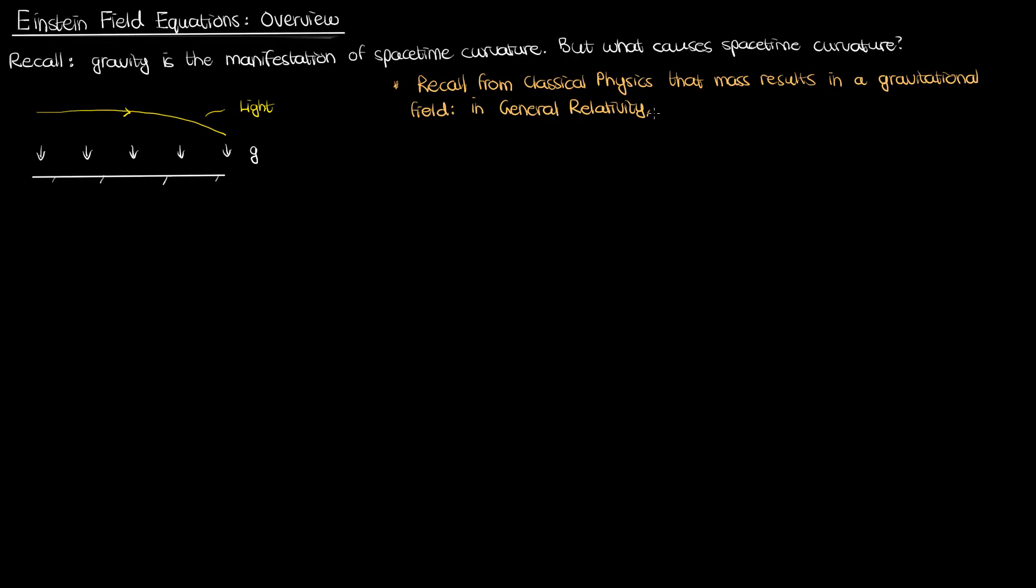From classical physics you know that mass results in a gravitational field, but in general relativity the idea of gravitational field and gravitational pull is kind of obsolete, and in fact has been replaced by spacetime curvature. However, the same principle still applies. Just as mass causes a gravitational field in classical physics, in general relativity mass results in spacetime curvature, in gravity. But it's not just mass.